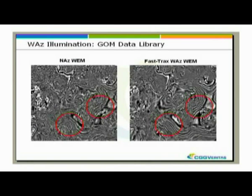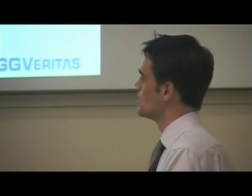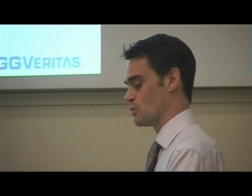An important point here is that I've designated the wave equation migration for the wide azimuth one as a fast-track product, which means it's not had a full processing sequence. It's basically come off the boat and we've migrated it, and yet it's miles ahead of the narrow azimuth image. This points us towards the fact that in certain geological scenarios, narrow azimuth acquisition and processing techniques are reaching a kind of technical limit.